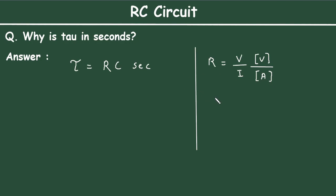Now for capacitance, C equals charge divided by voltage, where the unit of charge is Coulomb [C] and the unit of voltage is volt [V].